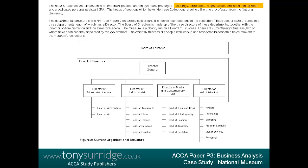The departmental structure of the National Museum is largely built around 12 main sections grouped into three departments, each with a director. The Board of Directors is made up of the three directors together with the director of administration and the director general. The museum is a charity run by a board of trustees — there are currently eight trustees, two of whom have been recently appointed by the government. The other six are people well known in academic fields relevant to the museum's collections. The fact that the museum is directed by a board of trustees represents both legal and power problems — I use grey for legal.